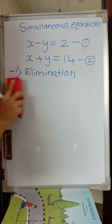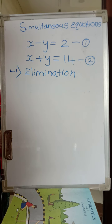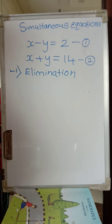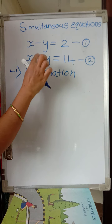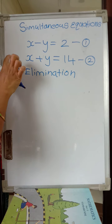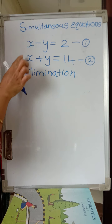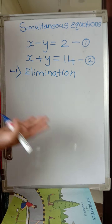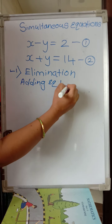Look at these two equations carefully. I want to eliminate either x or y. If I add the two equations, y and minus y will get cancelled — I eliminate y. If I subtract the two equations, x and x will get cancelled — I eliminate x. So you can either add or subtract; it becomes one and the same. Let us add equation 1 and equation 2.